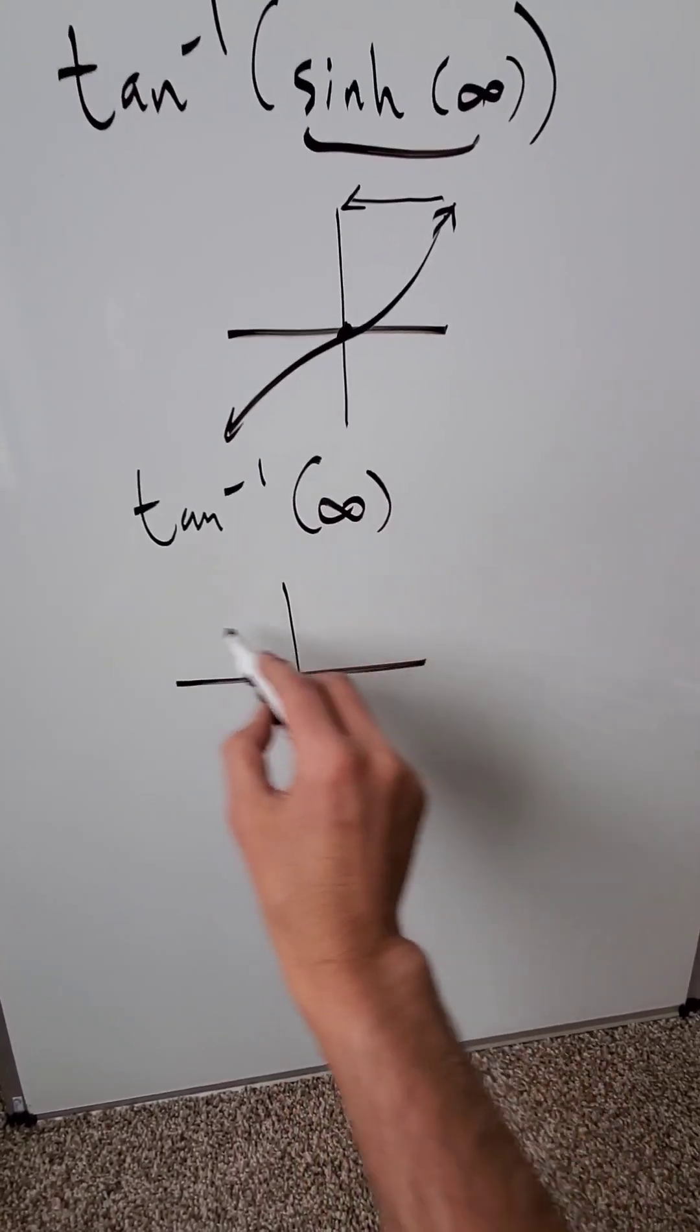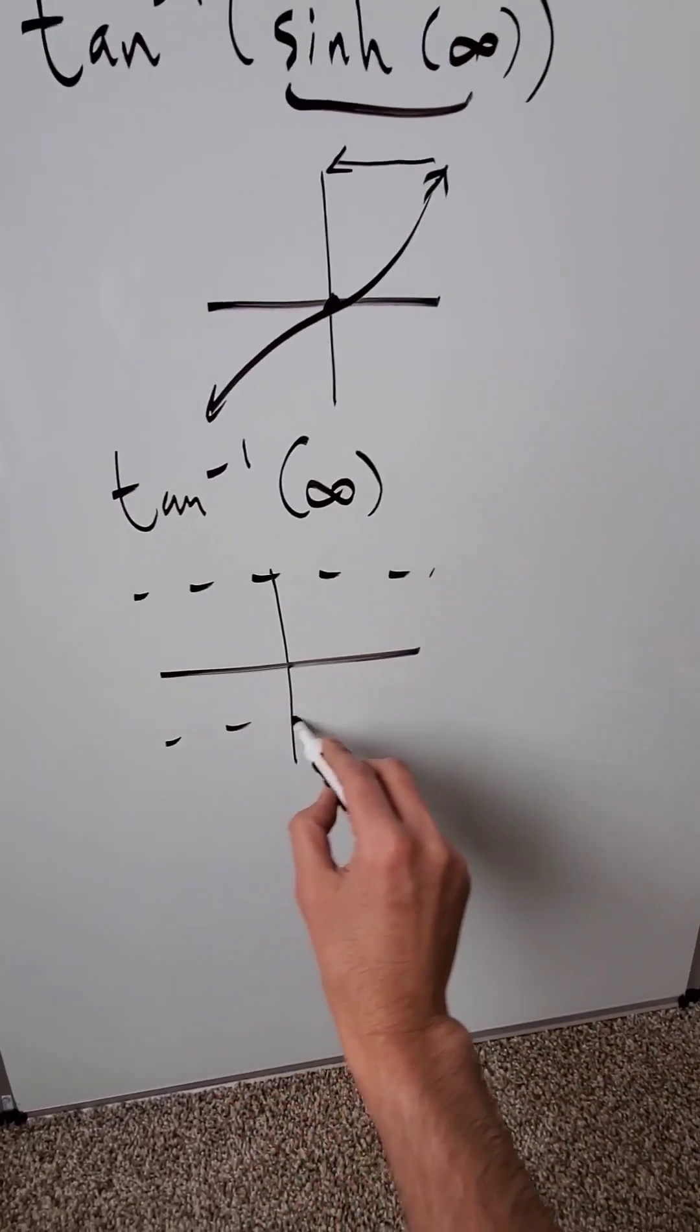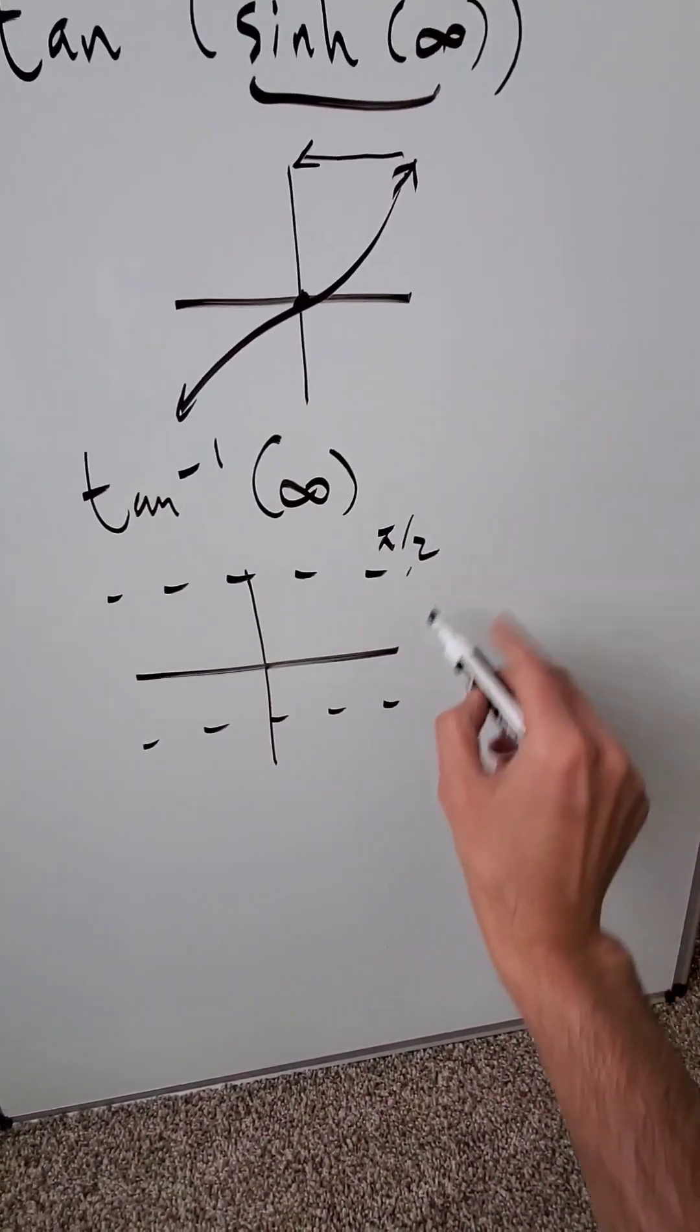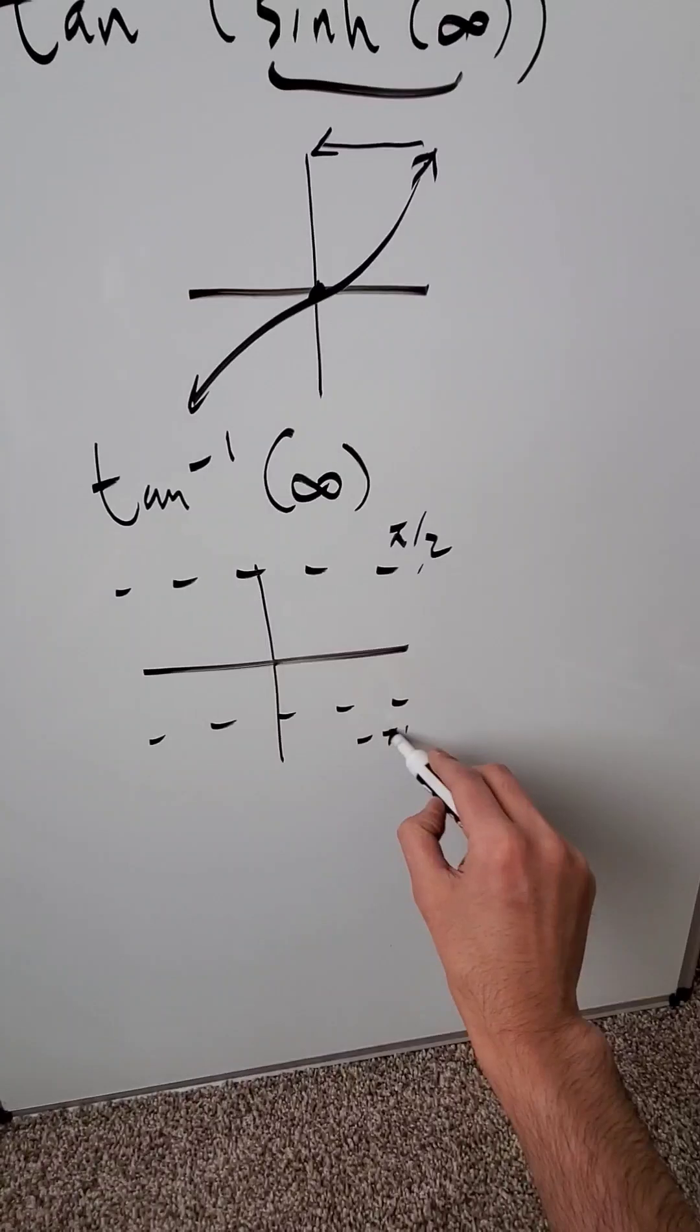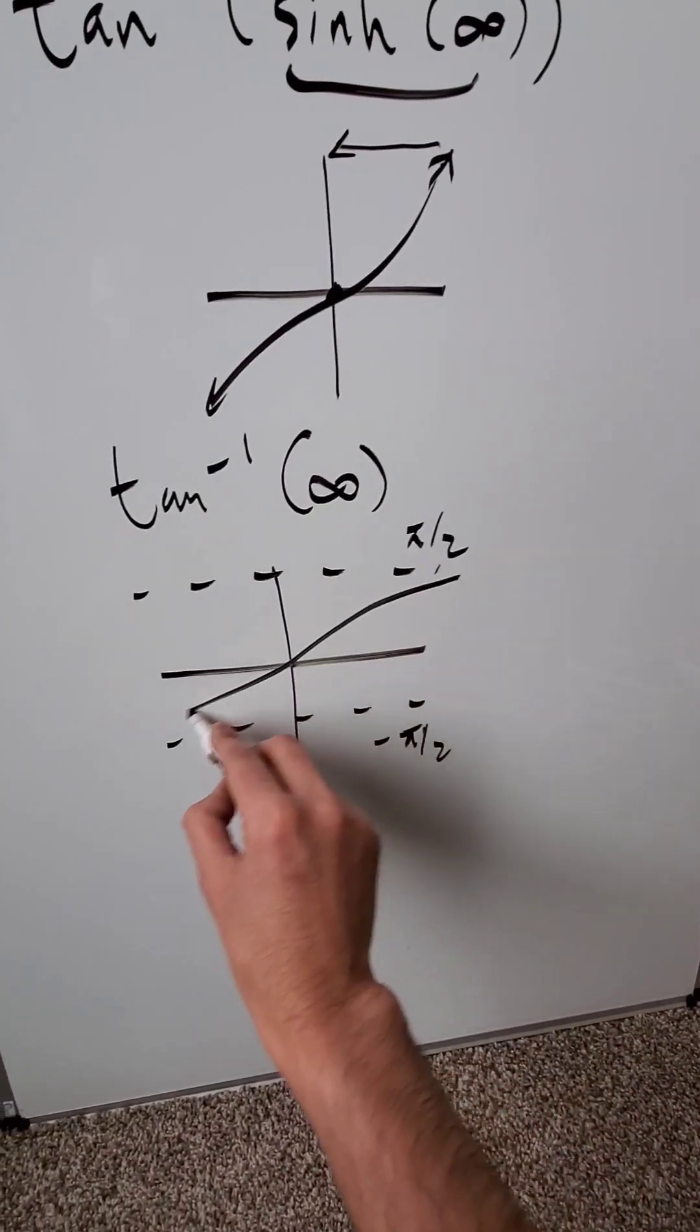Now look at the graph of your inverse tan or arc tan. It's squeezed between two horizontal asymptotes, y equals pi over 2 and y equals minus pi over 2. Your function looks something like this.